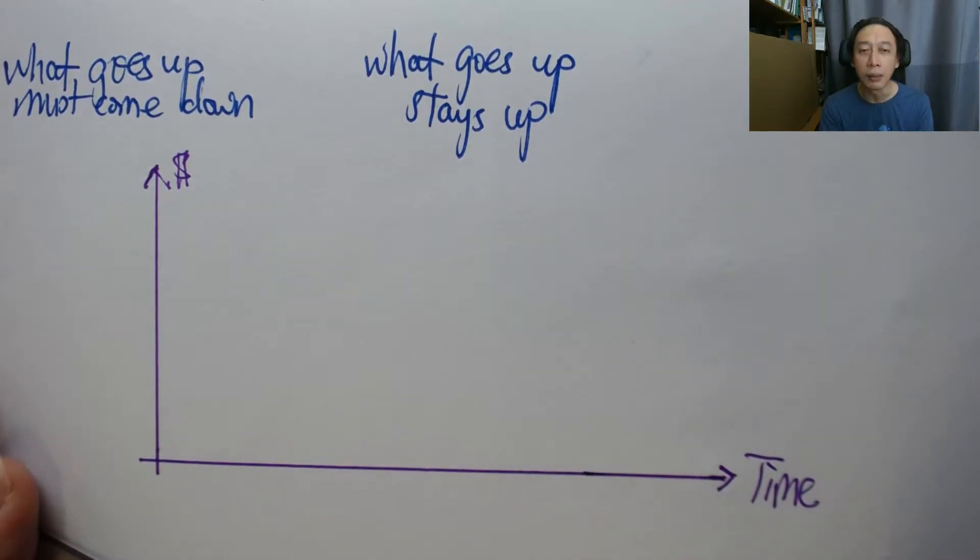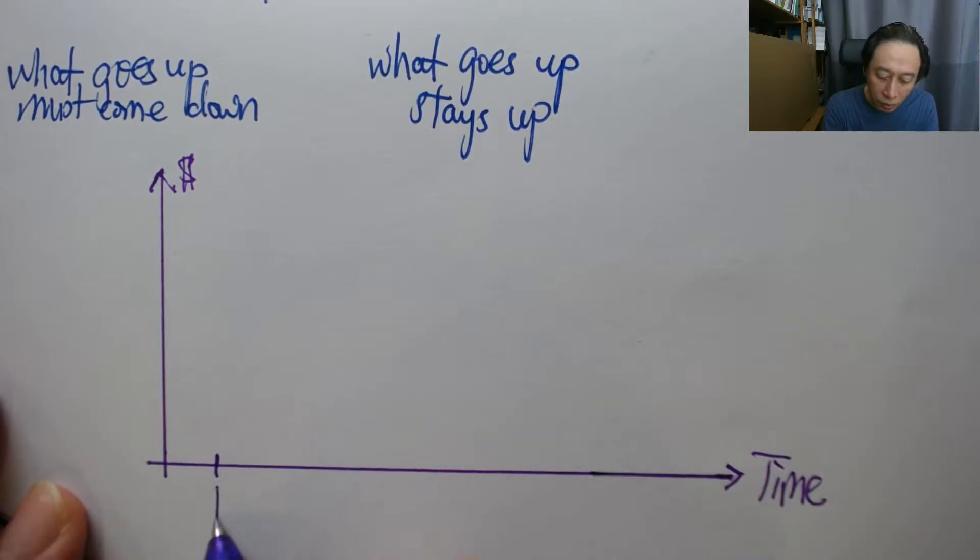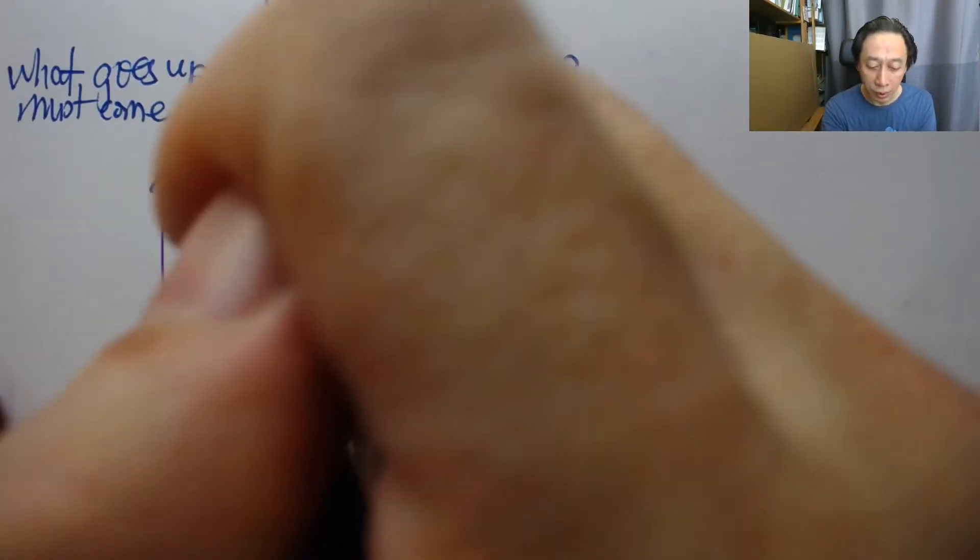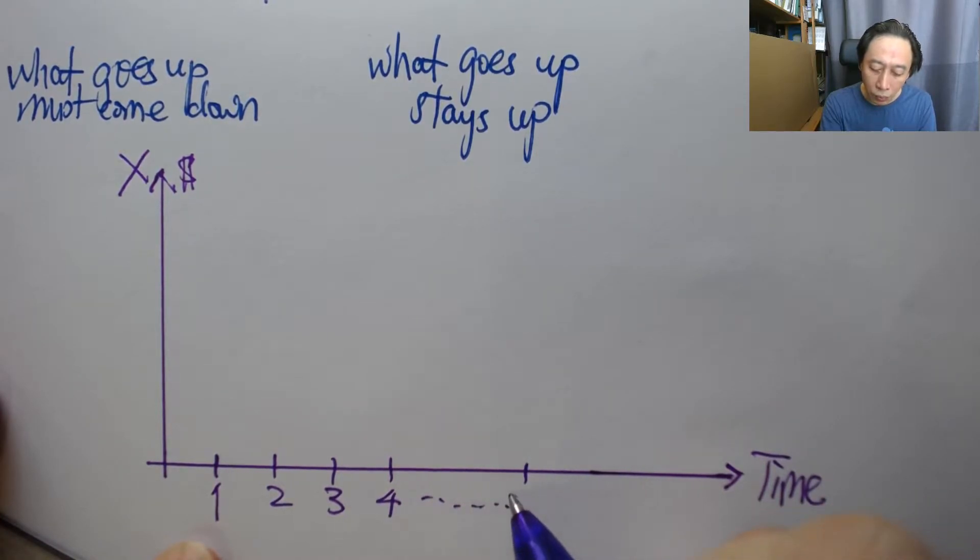In time series we don't look at time as continuous value, interestingly. We look at time as discrete intervals, so we have discrete times. We only know about the values of the intended business variable such as the stock price X at these time points.